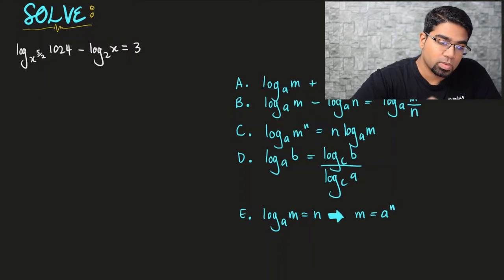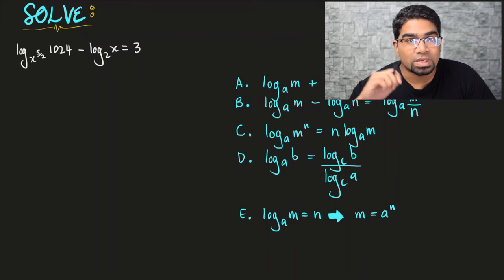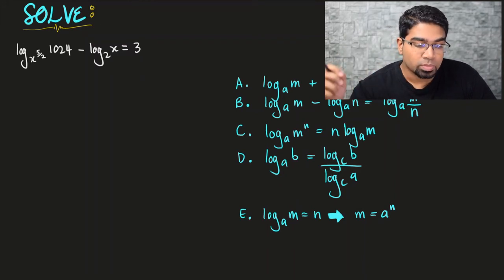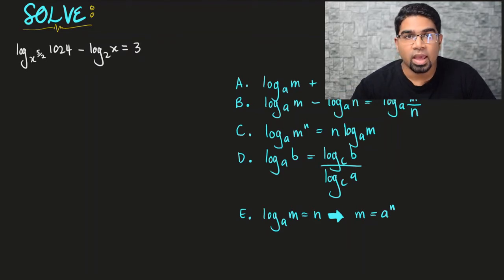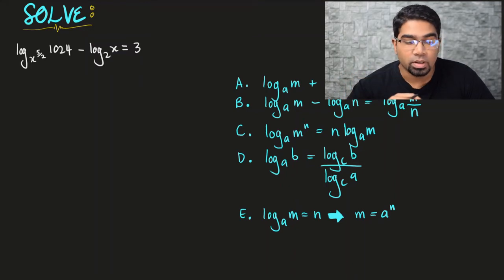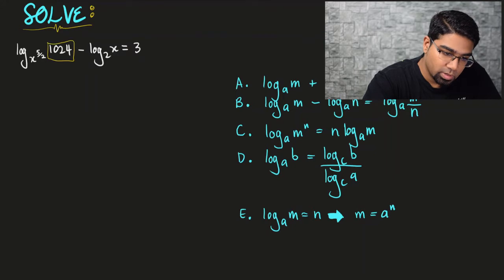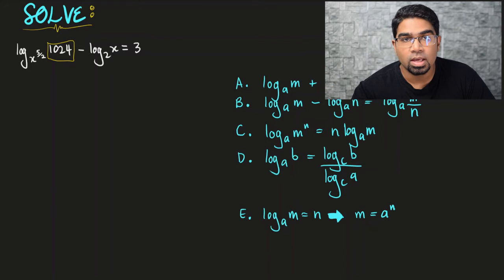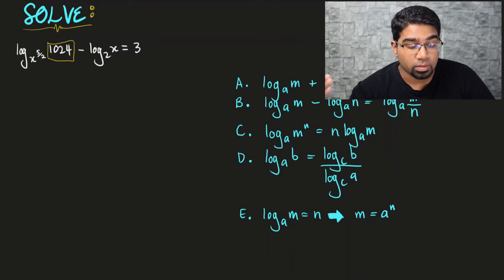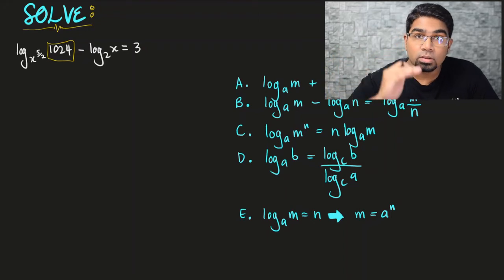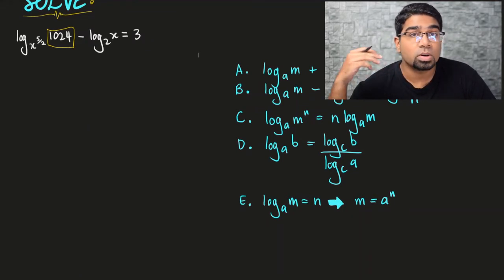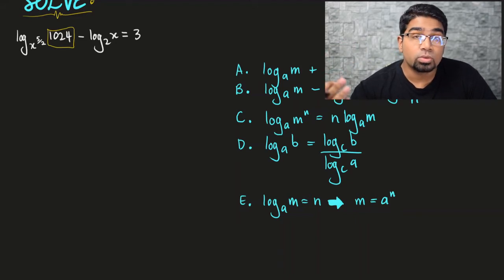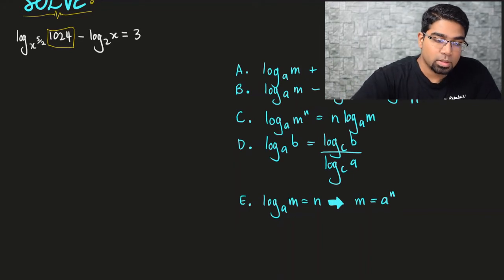We have a very odd base, so the first thing we want to do is change the base. The clue is in the other term — the other term has base 2. Another clue is the value 1024. If 1024 can be written as 2 to the power of a number, then log base 2 will work. Using your calculator, you'll find that 1024 is indeed 2 to the power of 10.